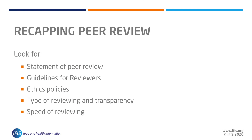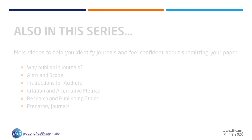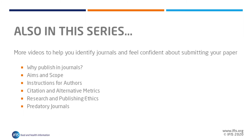Peer review processes are just one way to decide which journals you might submit to. For more ideas to help you identify journals and feel confident about submitting your paper, read through our full expert guide to journal publishing and watch the other videos in this series, which look at instructions for authors, aims and scope, citation and alternative metrics, research and publishing ethics, and predatory journals.